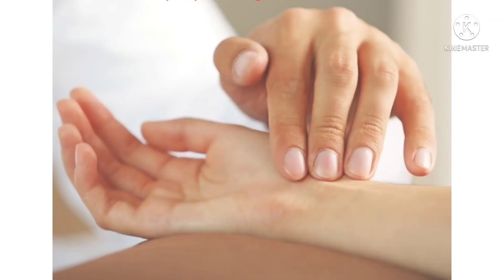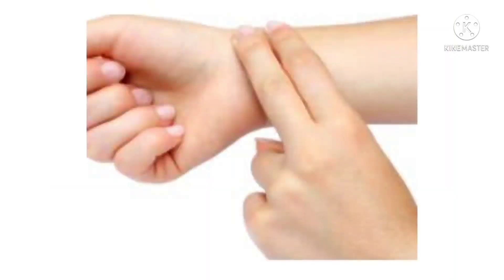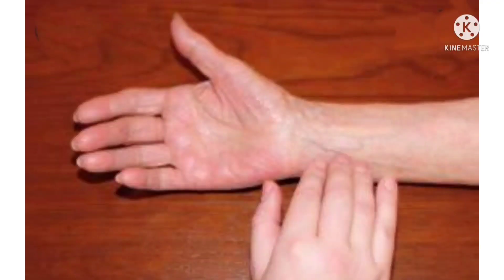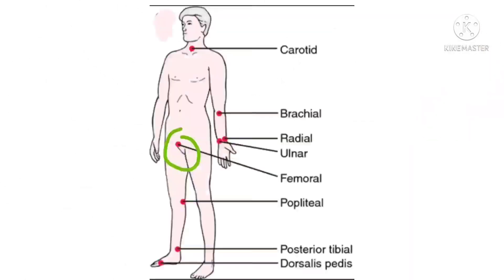The next pulse point is the radial artery. The radial pulse can be taken on either wrist. Use the tip of the index and third fingers to feel the pulse in your radial artery, between your wrist bone and the tendon on the thumb side of your wrist, applying just enough pressure to feel each beat. The ulnar pulse can be felt on the medial side of the wrist at the ulnar artery.